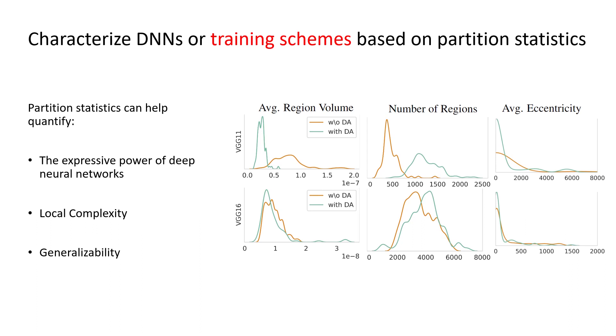We see that data augmentation significantly increases the partition density around test points for the shallower VGG11 network, but the difference is not as pronounced for the deeper VGG16 network. Such partition statistics can be interesting and very useful to characterize deep neural networks or study their local complexity or generalizability that has been previously reported in literature.